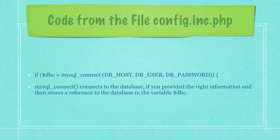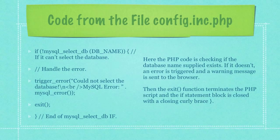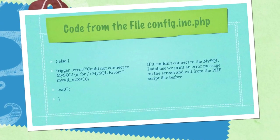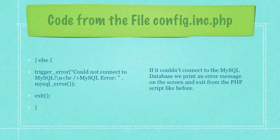mysql_connect connects to the database if you provided the right information and then stores a reference to the database in the variable dbc. Here the PHP code is checking if the database name supplied exists. If it doesn't, an error is triggered and a warning message is sent to the browser. Then the exit function terminates the PHP script and the if statement block is closed with a closing curly brace. If it couldn't connect to the MySQL database we print an error message on the screen and exit from the PHP script like before.